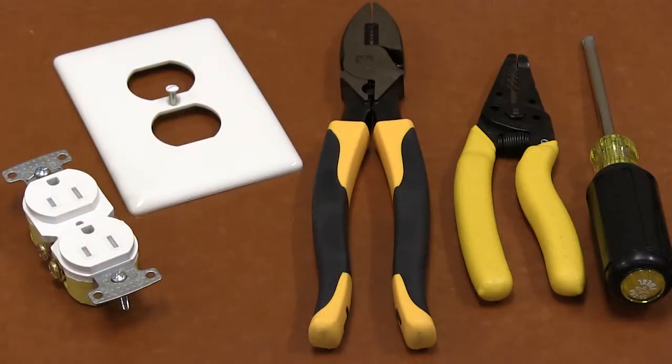Let's start by reviewing what materials you will need. You will need an X-Clamp receptacle, a wall plate, a screwdriver, a splice crimp connector, pliers, and a crimper.